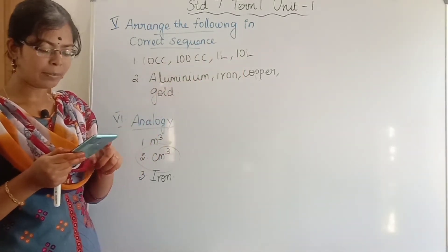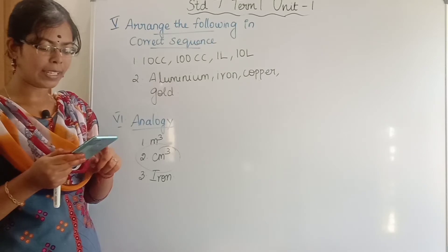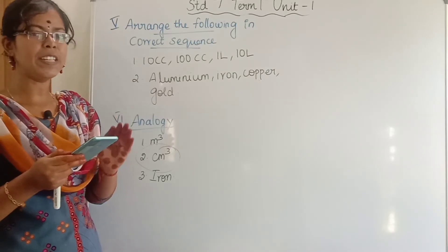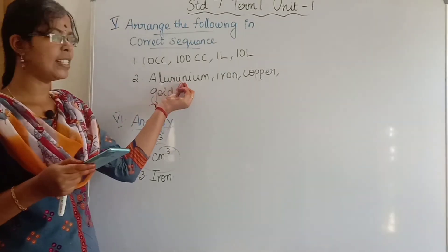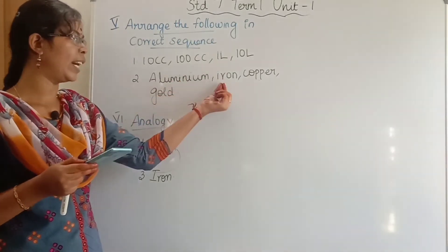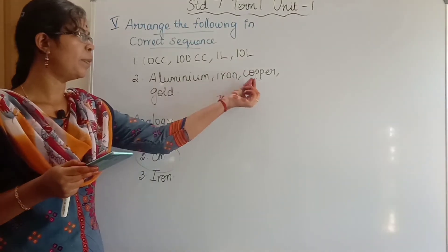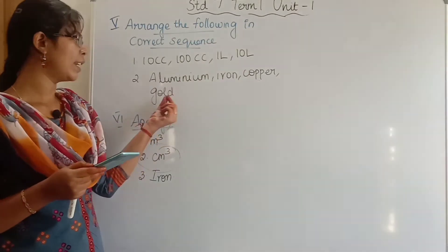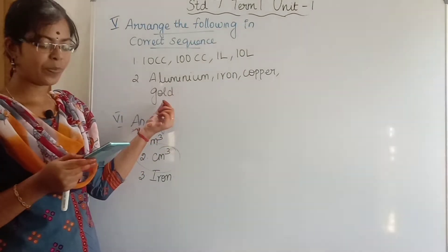Second question: arrange Copper, Aluminium, Gold, Iron by density in ascending order. The correct order is: Aluminium, Copper, Iron, Gold.